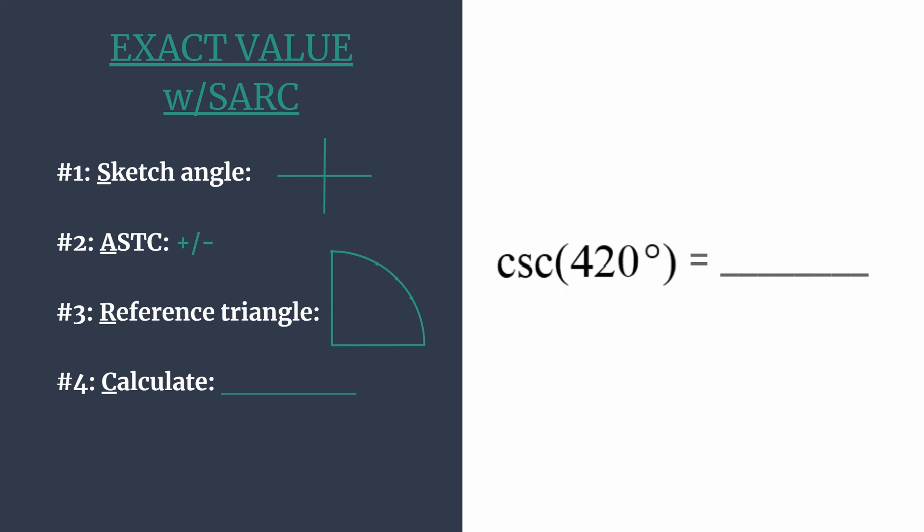Since we know 360 is one rotation, we can actually subtract 360 from 420 and we see that 60 degrees is going to be our angle that is coterminal to 420. Coterminal just means they share the same terminal side, and the terminal side is really what we want to sketch here. That's what all of our other steps depend on.